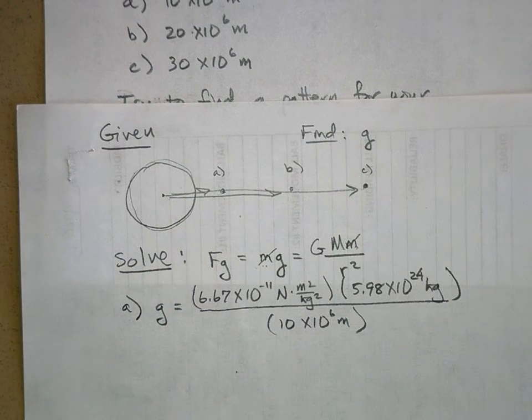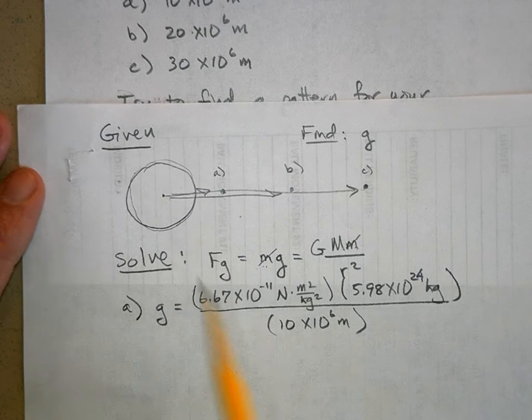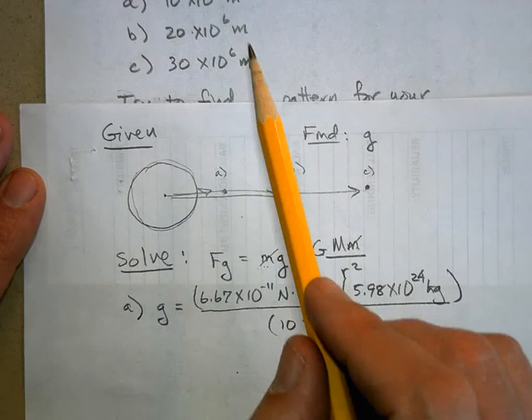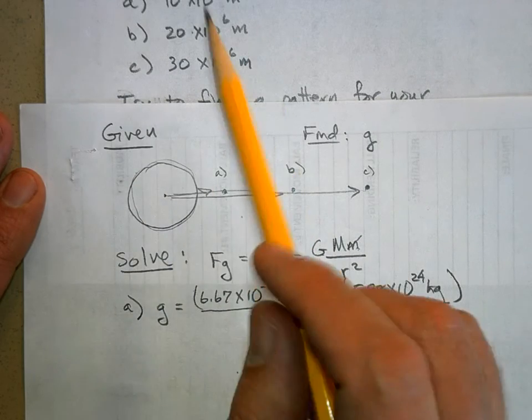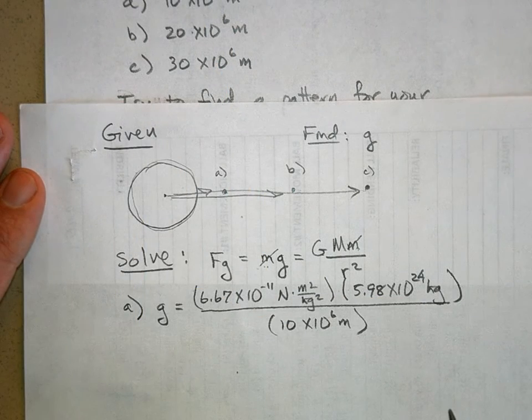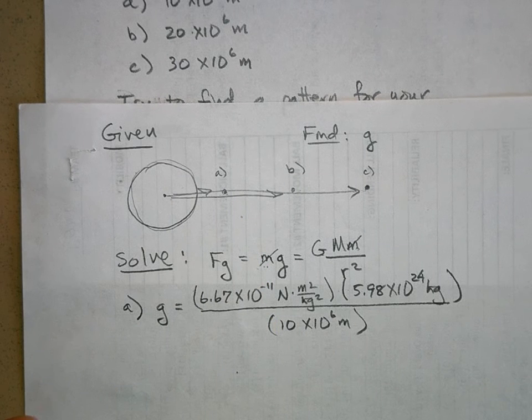You don't have to add the radius of the Earth to this like we did in some problems, because what I gave you in part A is not an altitude above the surface, but the actual distance from the center of the Earth. So I don't need to add the radius of the Earth to that.